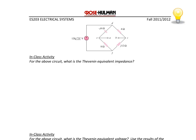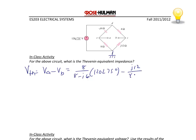Let's look at another example. For this circuit, what is the Thevenin equivalent impedance across terminals A and B? This is a Wheatstone bridge and we can use the voltage divider to find V_Thevenin. V_Thevenin equals the voltage at A minus the voltage at B. Using the voltage divider, the voltage at A is (8 / (8 − j6)) × 120∠75°, and the voltage at B is (j12 / (4 + j12)) × 120∠75°. So V_Thevenin equals 37.95∠−139.7° V.